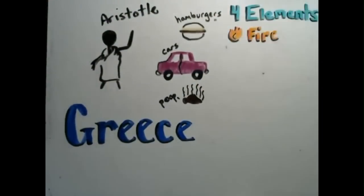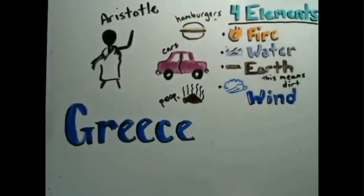He said that everything was made of one of four elements: fire, water, earth (that's dirt), and wind (that's air).